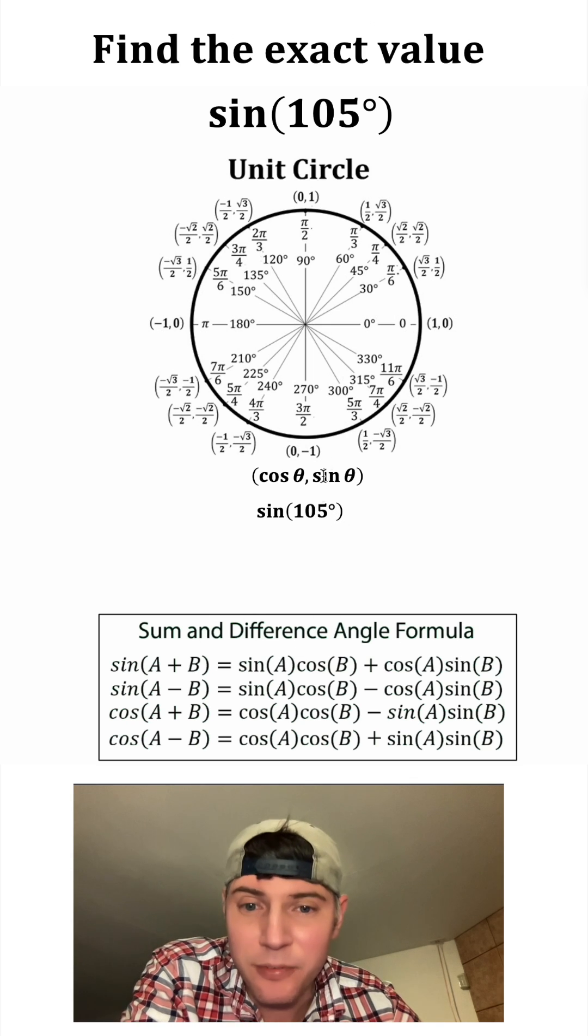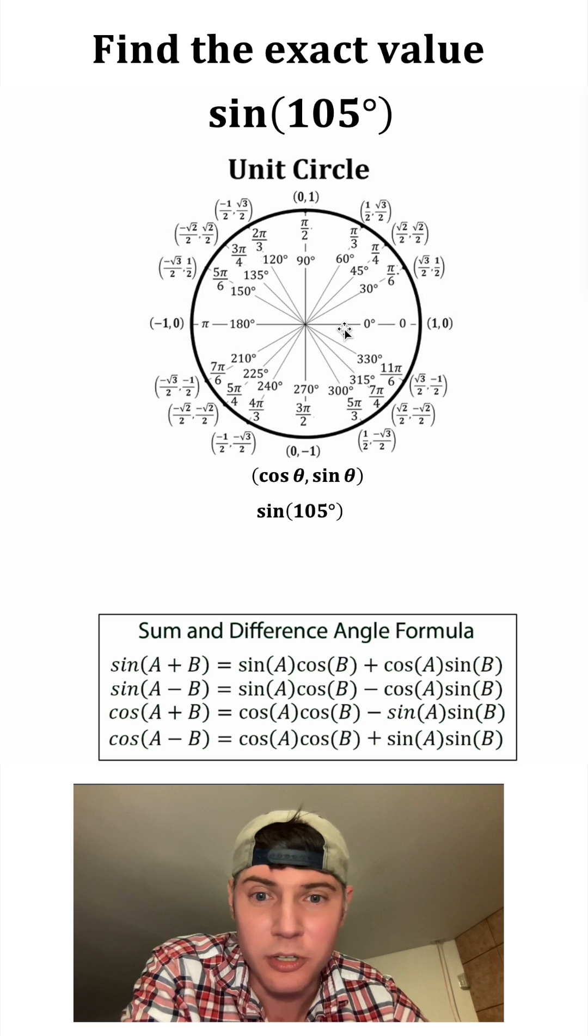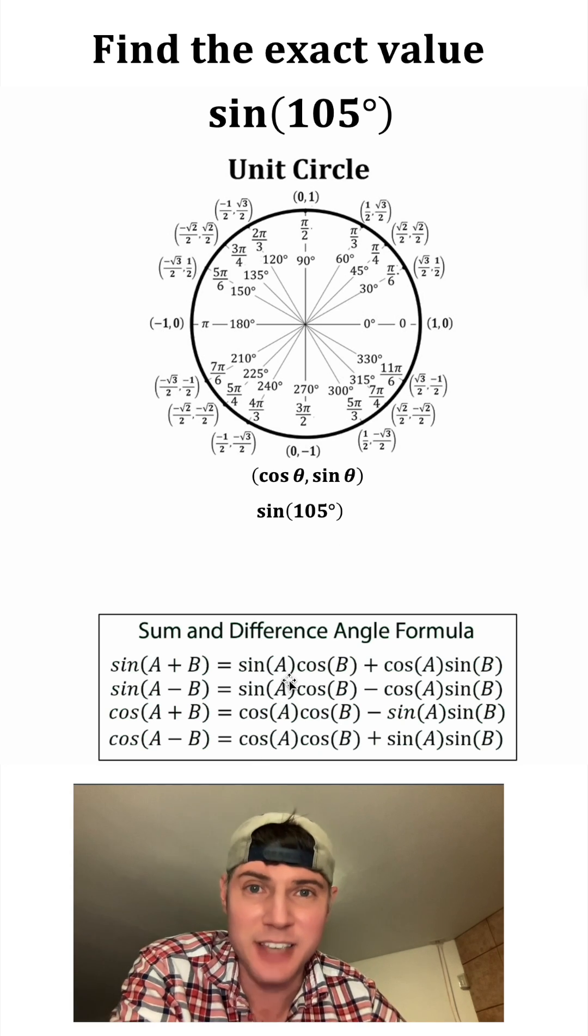What this allows us is if we can create 105 by adding or subtracting anything on the unit circle, we can then use these formulas to get an exact value.